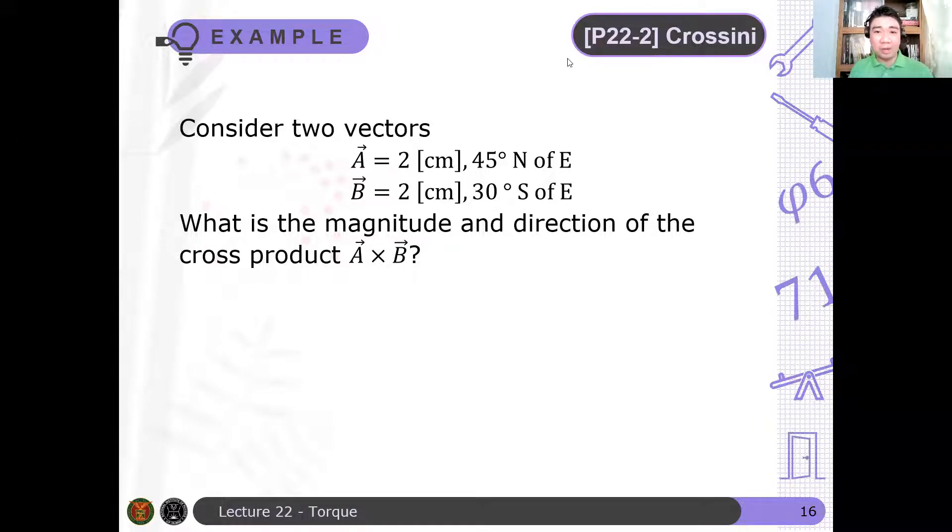Okay, here's another example of a cross product, but this time we're going to use the magnitude direction form. So consider two vectors: A is 2 cm, 45 degrees north of east, and B is 2 cm, 30 degrees south of east. What is the magnitude and direction of the cross product A cross B?